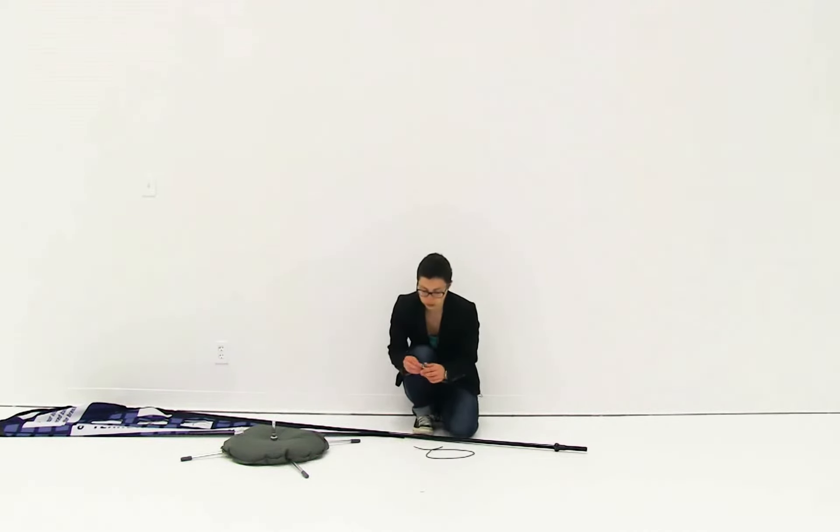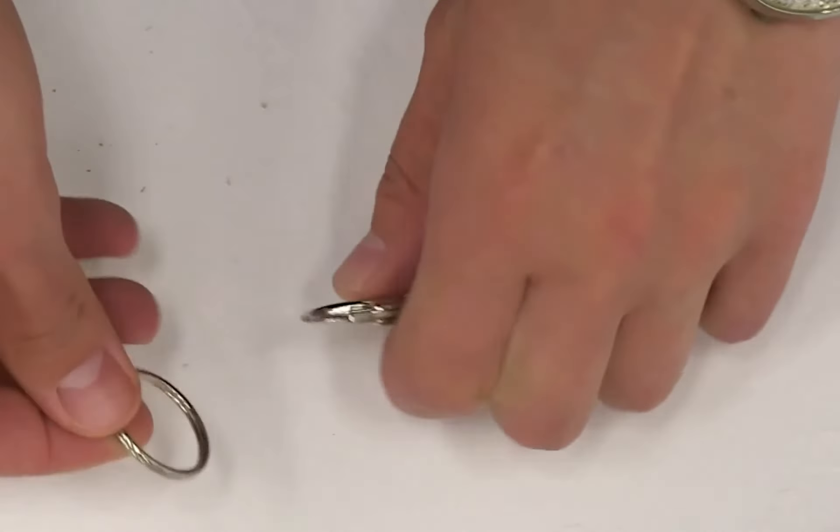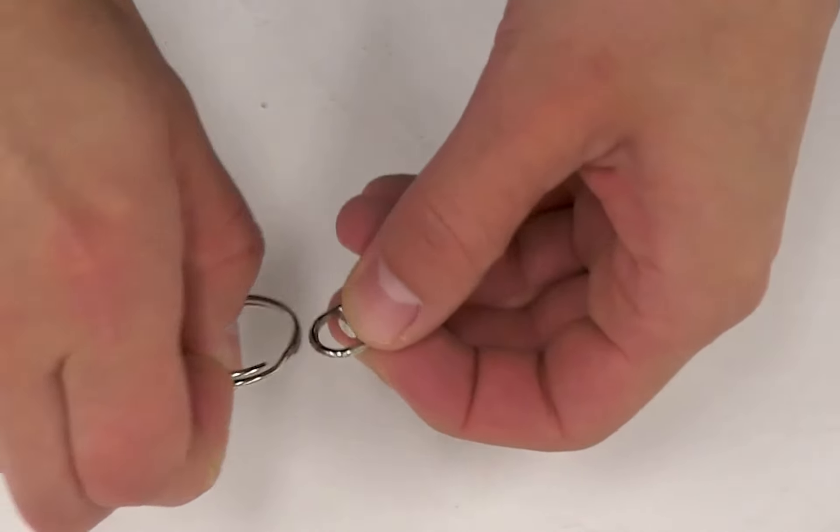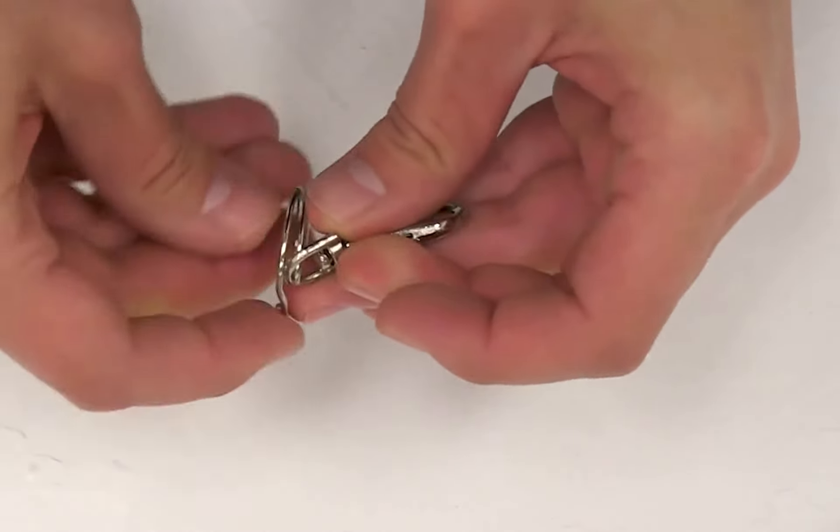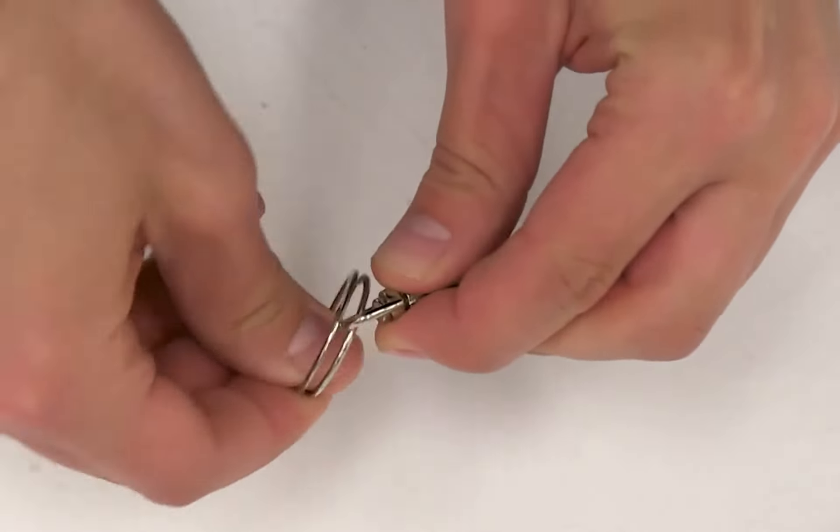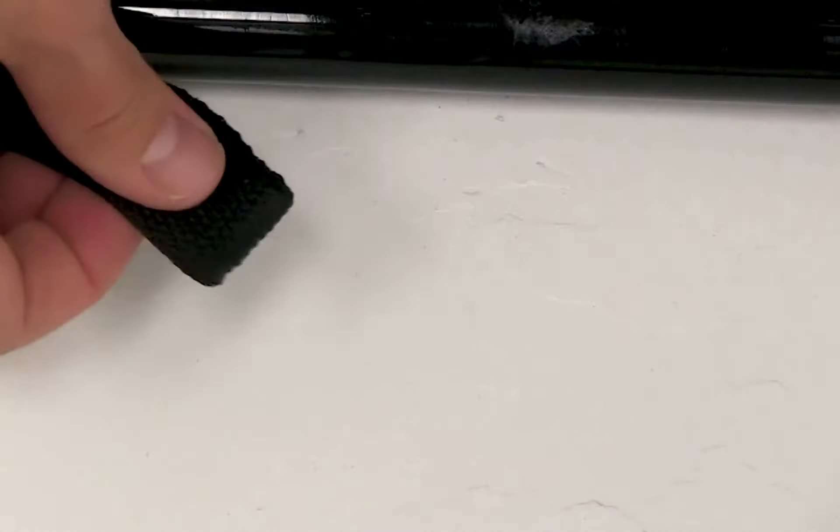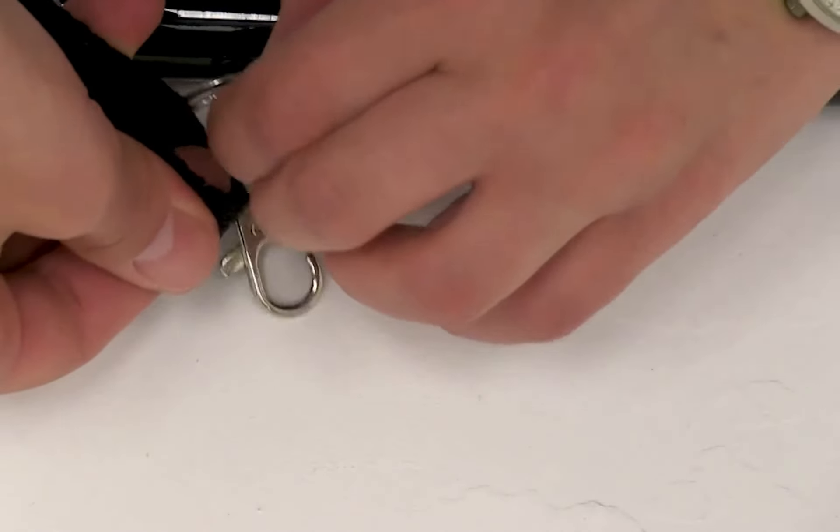First thing you're going to do is remove the ring from the clip and then attach the ring to the bottom of the clip. Once you have the ring connected to the bottom of the clip, you're going to insert the ring onto the loop located on the bottom of the graphic.